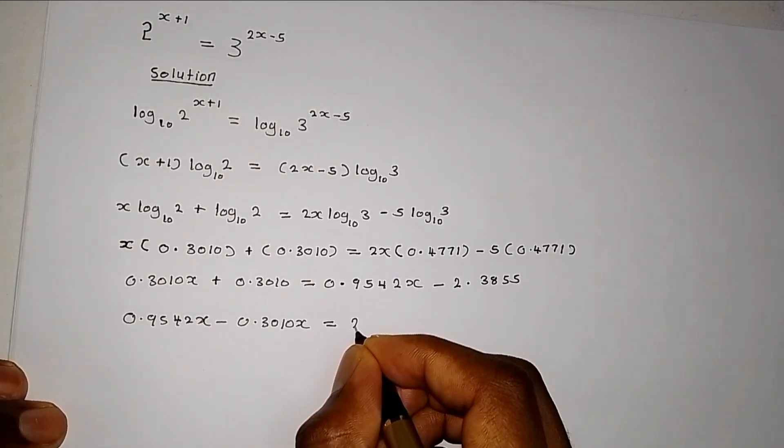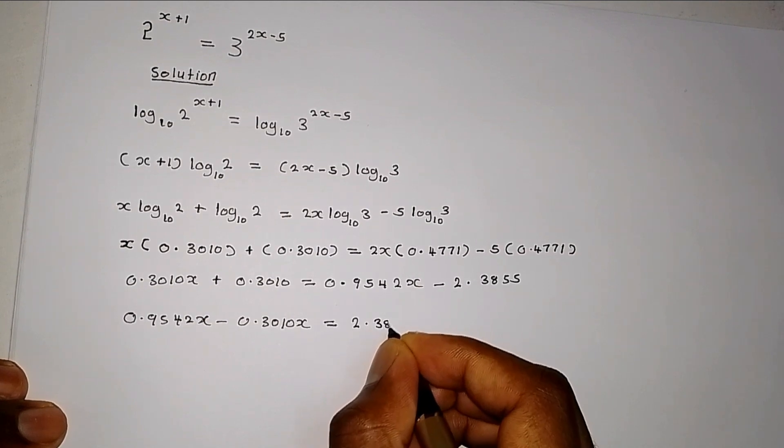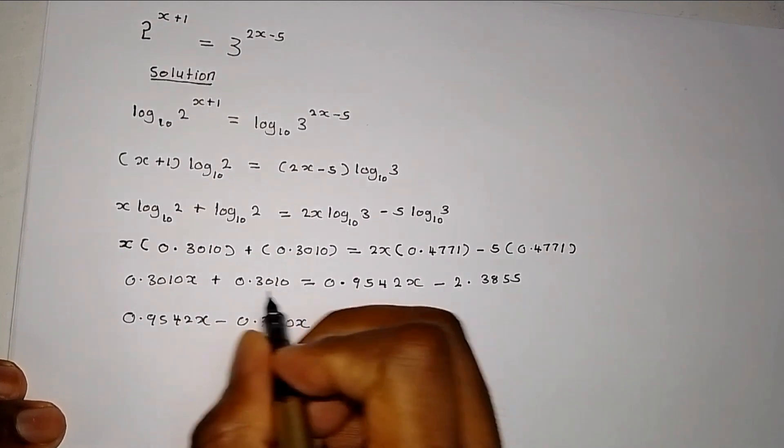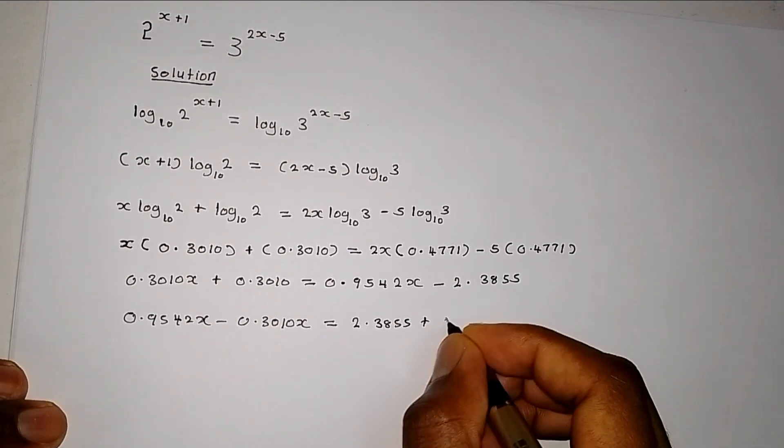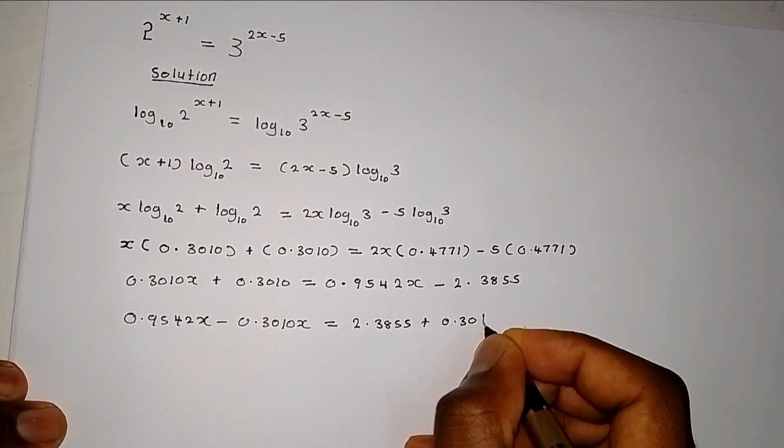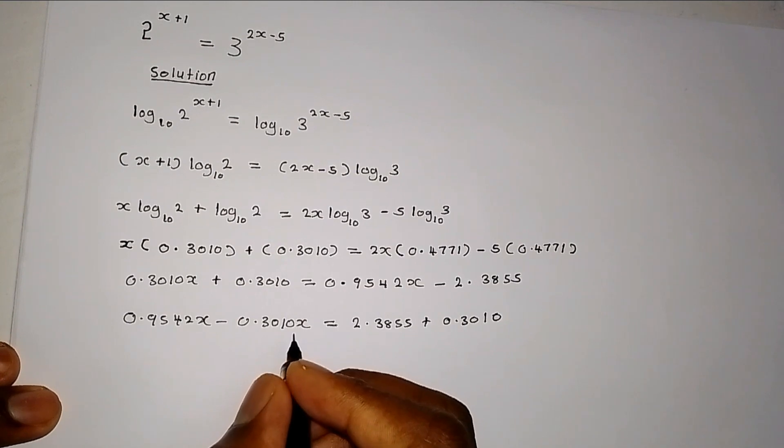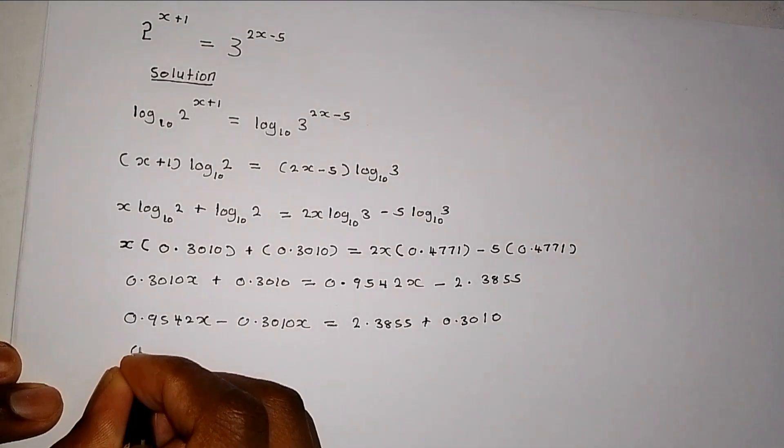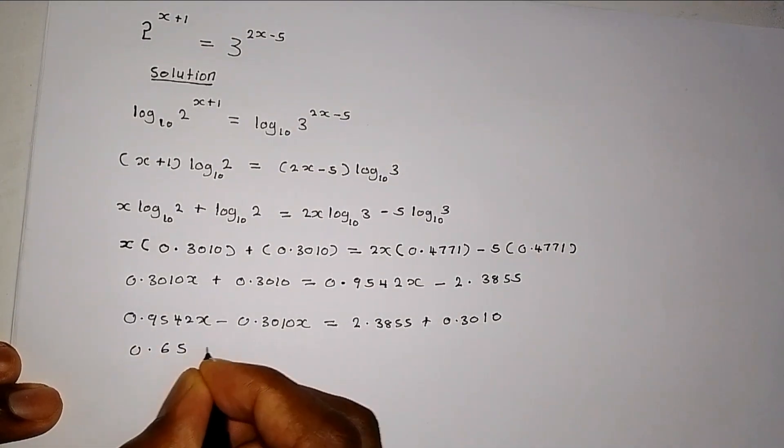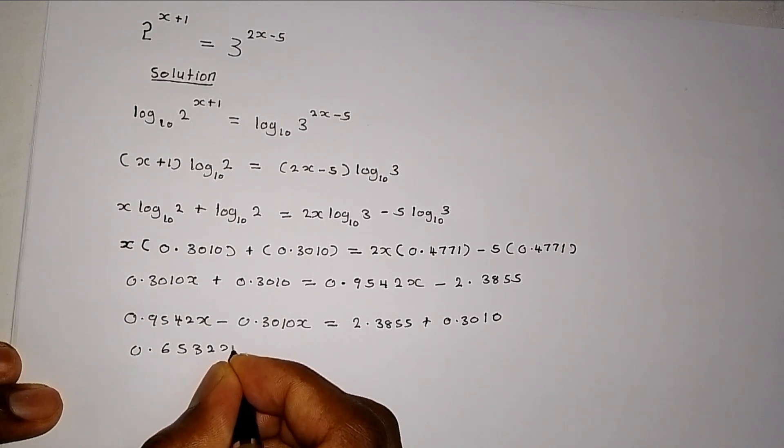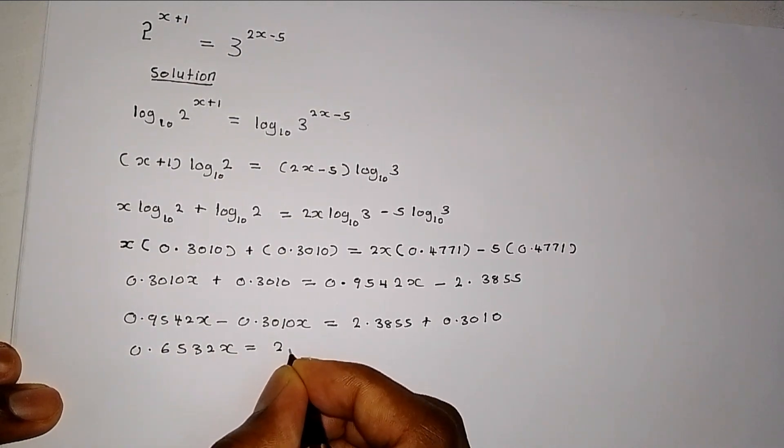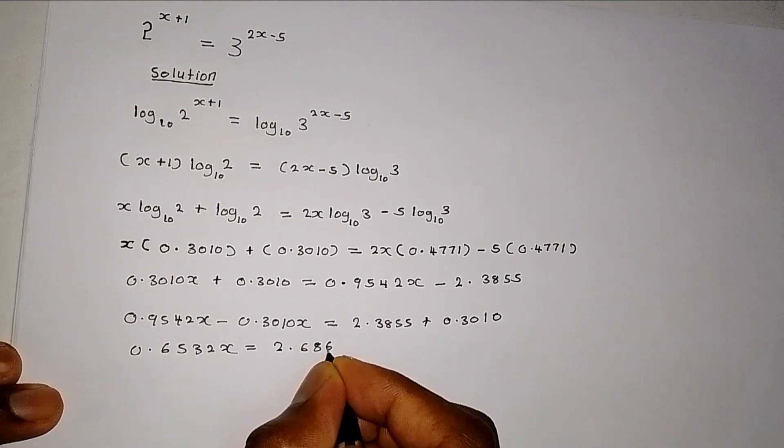So this becomes 2.3855, this value. Add this, 0.3010. Now, on this side, after subtracting, we are going to get 0.6532x, which equals 2.6865.